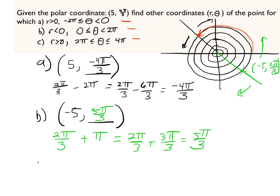So, in C, again, we're back to a positive radius. So, again, I write 5, comma, some angle. And we start, again, with our idea of 2π over 3. So, we have 2π over 3. And then, but I need to be between 2π and 4π now.